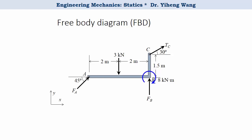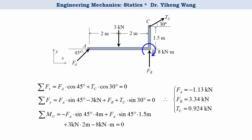We can write the three equilibrium equations and solve for all of them. Note that the calculated FA is negative, which means the direction of force at collar A is opposite to what we originally assumed.